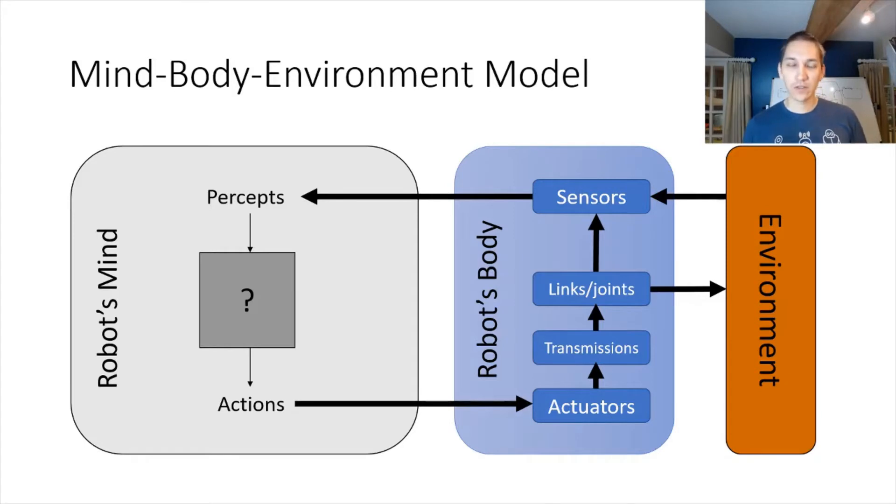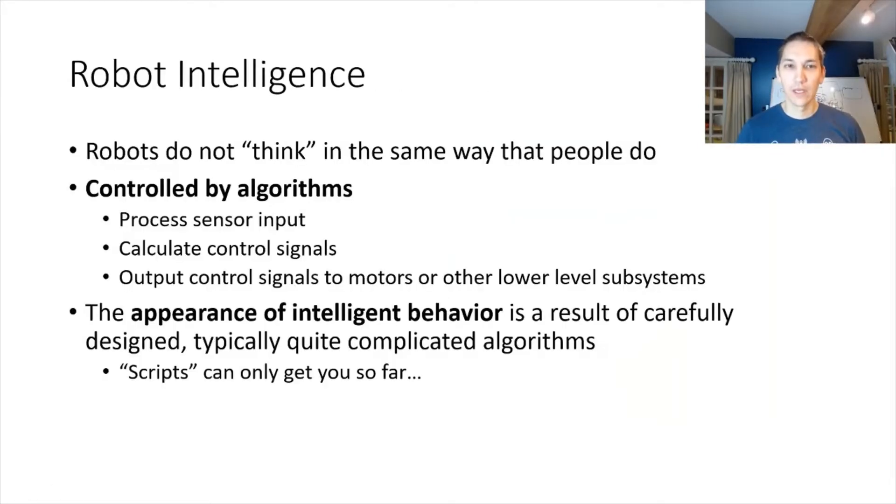The environment also provides information into the sensors. The sensors provide into the mind the first part of the mind-body environment interaction, which is called the percepts. The percepts can then be processed through some sort of magic box. We're going to be studying how to implement this magic box in this class in great detail. It does some processing on those percepts, and then it produces some sort of signals to act. These are called the actions. Those actions go out to the actuator. They then get transmitted back into links and joints, and then they affect the environment.